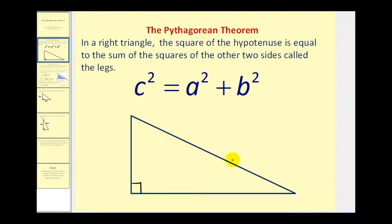The hypotenuse is the longest side of a right triangle. It's also opposite the right angle, and it must be labeled side c.